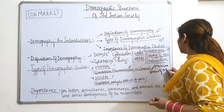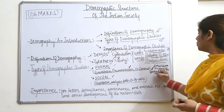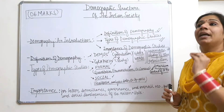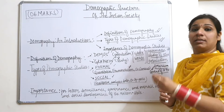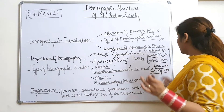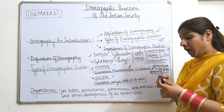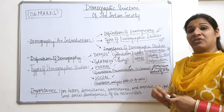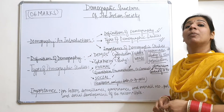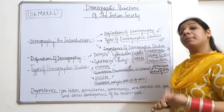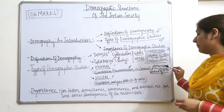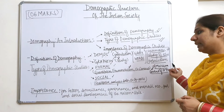An important fact to remember is the American census of 1790. This census is significant because it was one of the earliest forms of a very systematic census conducted in the world. There may be a one-marker question asking which was the first systematic census ever conducted — the answer is the American census of 1790.